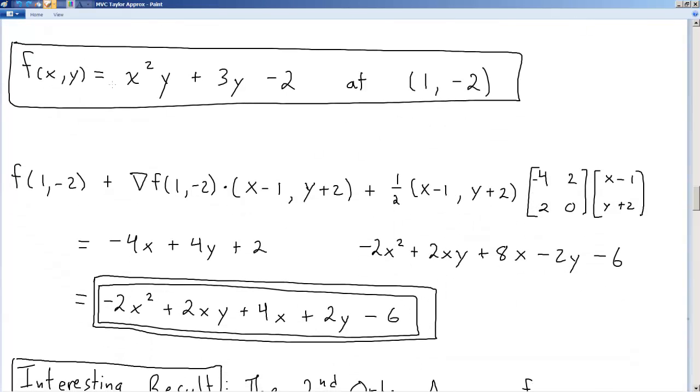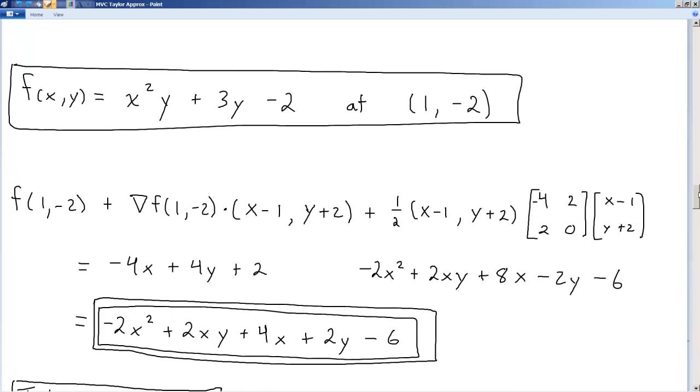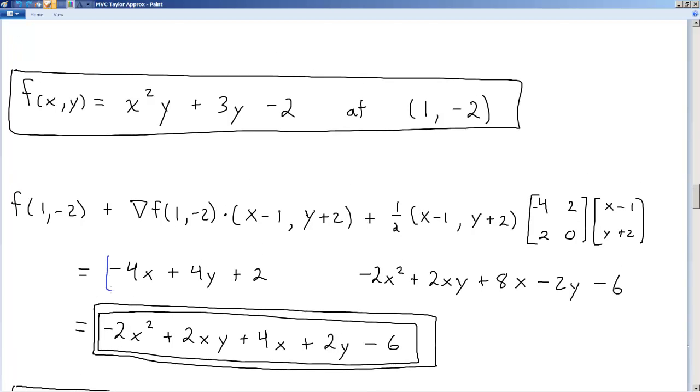So we have this function at this point. We're going to add the linear portion, the tangent plane. And we're going to add the second order stuff. And we will get -2x² + 2xy plus blah, blah, blah. All that. This is the second order approximation. This is the full second order.